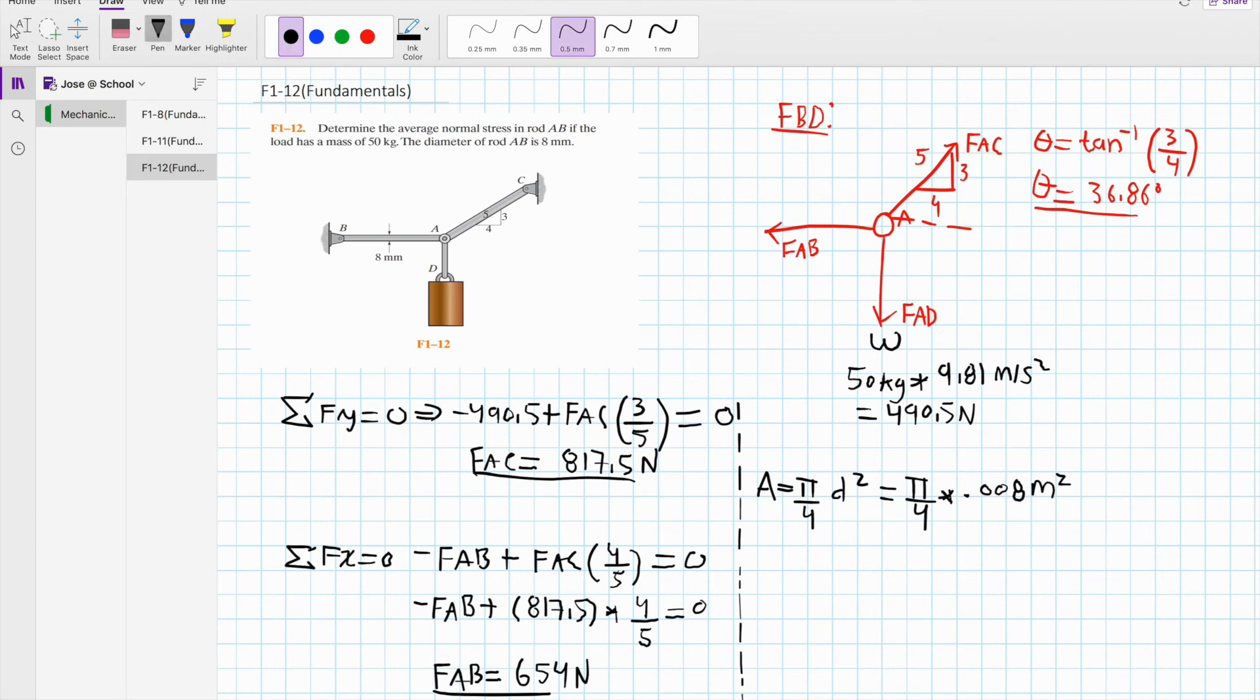After this, we are asked to calculate the average normal stress on rod AB. As you can see, we have your force FAB here and your area right here. The equation for the average normal stress is given by sigma average equals your force P divided by your area. Let's simplify the area. Punch these numbers in the calculator, and we get 5.03 times 10 to the negative 5.